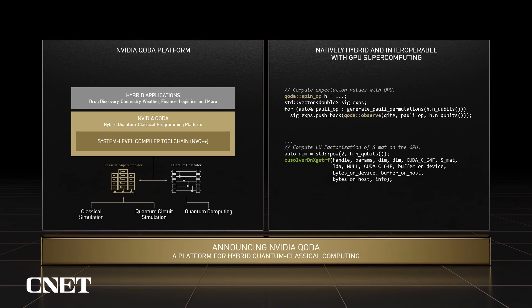The QITE algorithm is intrinsically hybrid and iterative, with each iteration depending on a linear solve from the previous iteration. Each linear system solve depends on a tomography step that's done on the QPU. This is an opportunity for GPU-QPU interoperability, and this code snippet demonstrates just that. Here we use CODA to compute expectation values of a set of poly spin-op instances, and use that as input to a cuSolver linear system solve, the results of which feed into the next iteration of the algorithm.